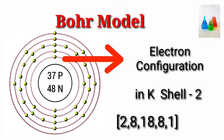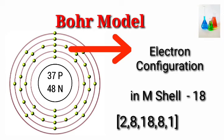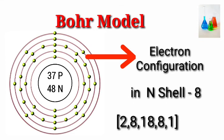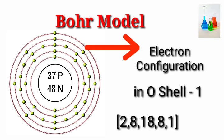Electron configuration: K shell 2, L shell 8, M shell 18, N shell 8, O shell 1.